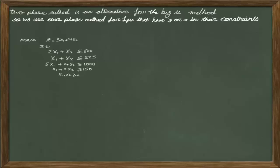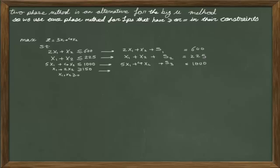This is the exact problem that we earlier solved using the Big M method. Before solving any optimization problem using the simplex method, the first step is to standardize the problem. For constraints with a less-than-or-equal sign, we use slack variables. For constraints with a greater-than-or-equal sign, we use excess and artificial variables, as learned in the Big M method lesson.